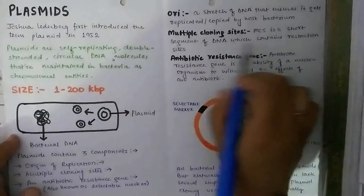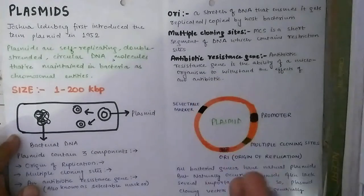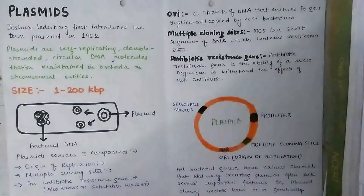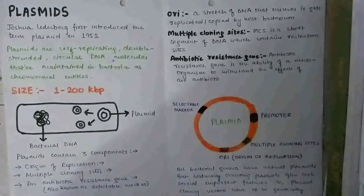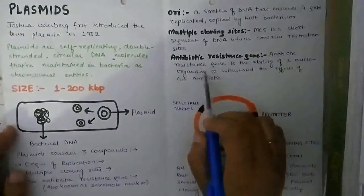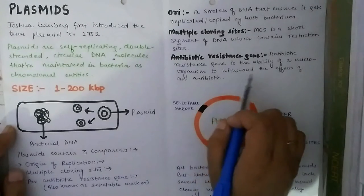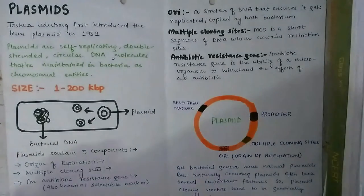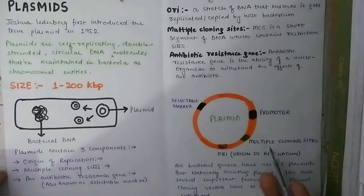The multiple cloning site is a short segment of DNA which contains restriction sites. The antibiotic resistant gene encodes resistance to antibiotics. Antibiotic resistance is the ability of a microorganism to withstand the effects of an antibiotic. Here is the diagram of the plasmid, showing a promoter region, multiple cloning sites, the origin of replication (ori), and the selectable marker.